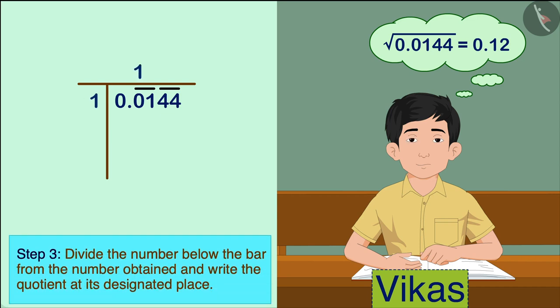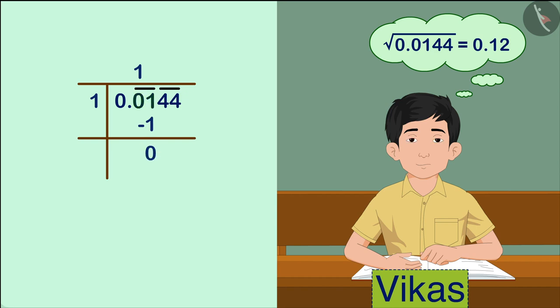Subsequently, considering the number obtained as the divisor and the number below the leftmost bar as the dividend, he found the remainder. The remainder obtained here is 0. Because the first divisional number was 1 in the decimal part, we would first add the decimal to the quotient and then the first digit would be 1.